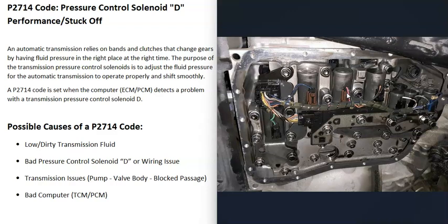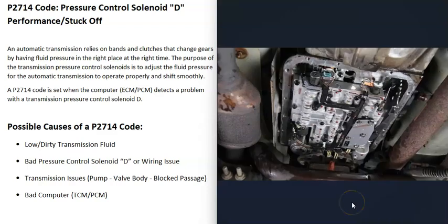The next cause is some kind of internal transmission issue — something has gone wrong inside the transmission that's preventing the control solenoid from working. This could be a bad pump, a bad valve body, or a fluid passage going to that solenoid getting clogged. If there is an internal transmission problem, you'll usually get a lot of other codes alongside P2714, so pay attention to any additional codes you're seeing.